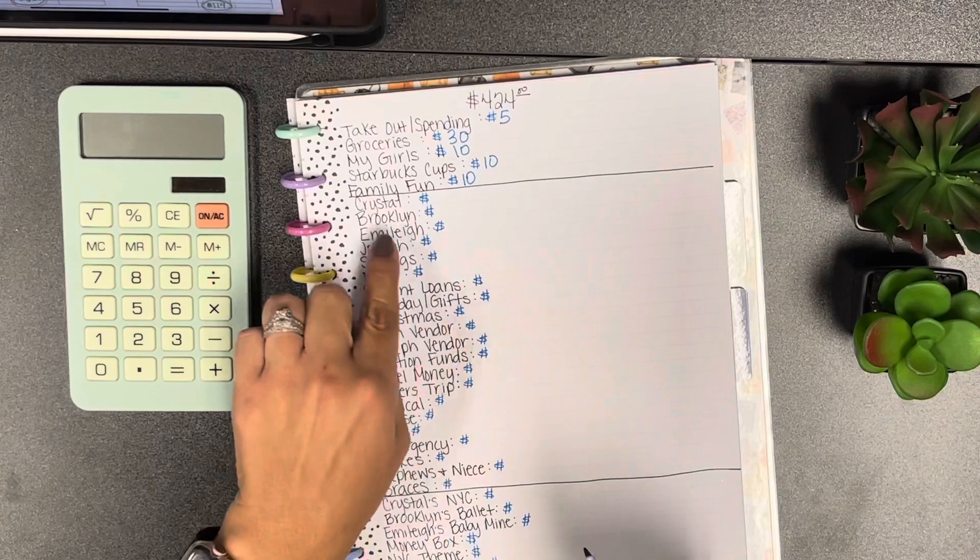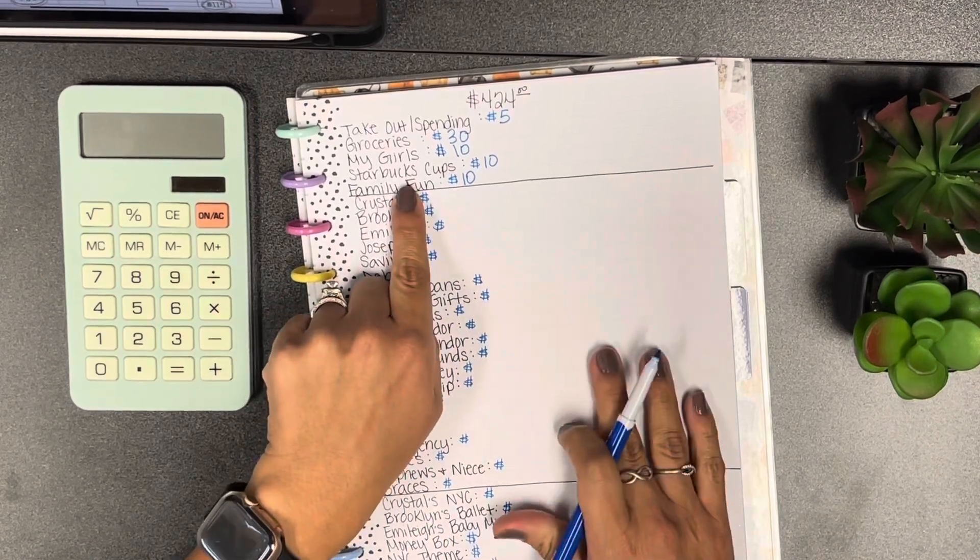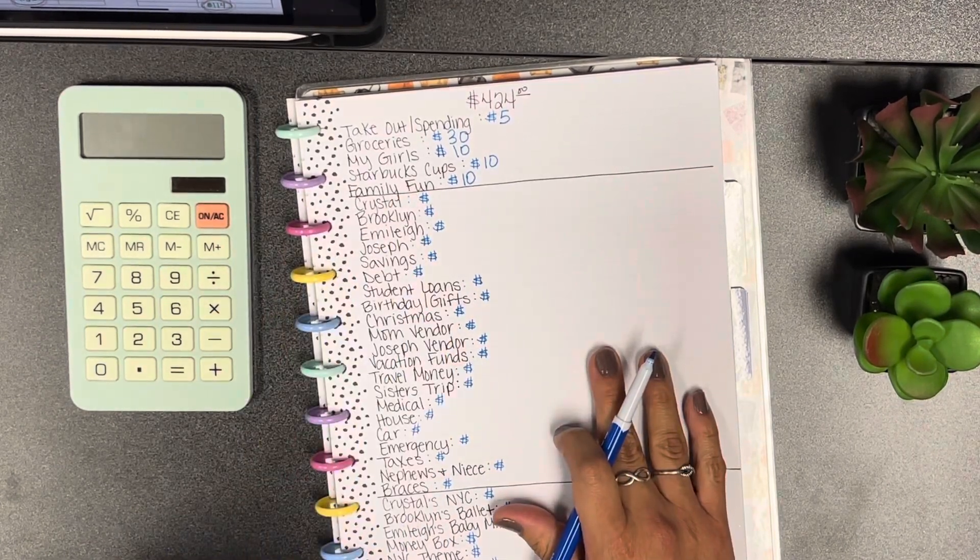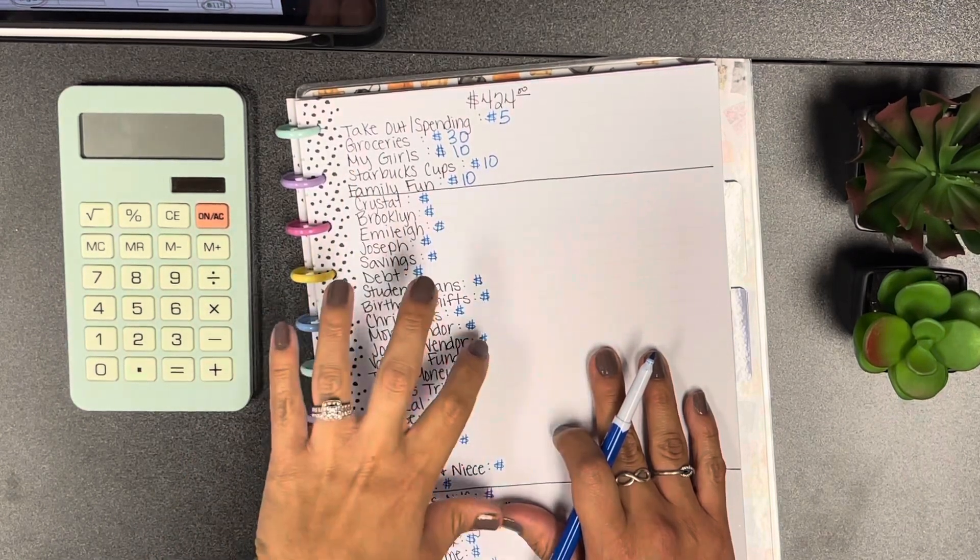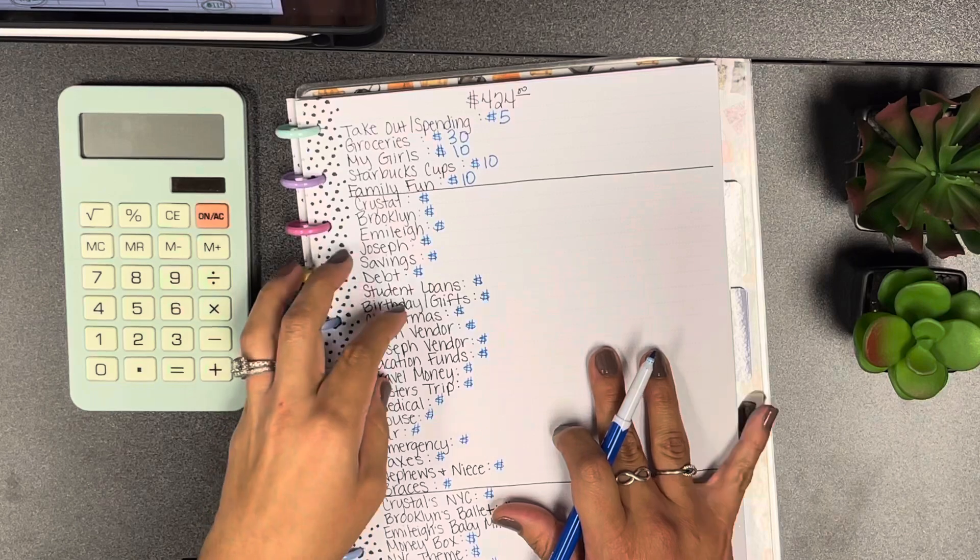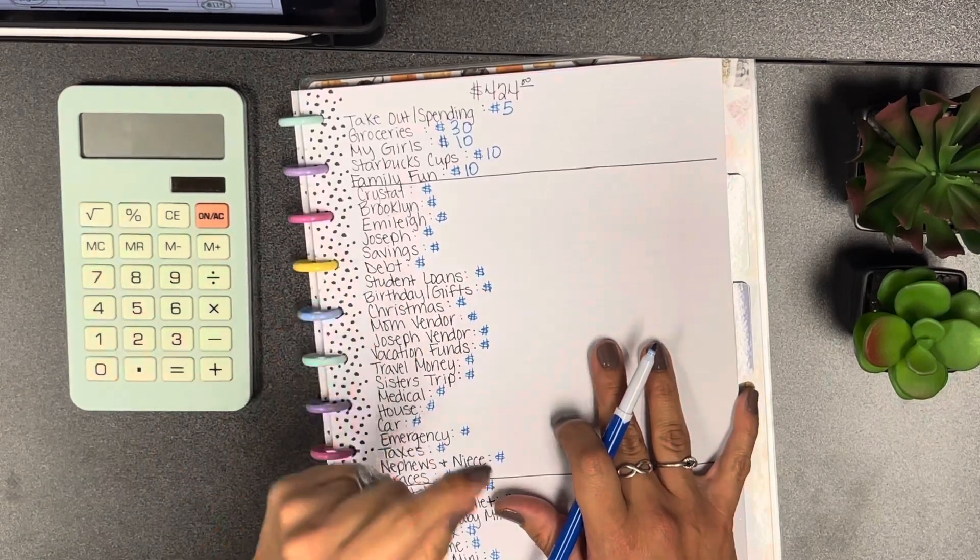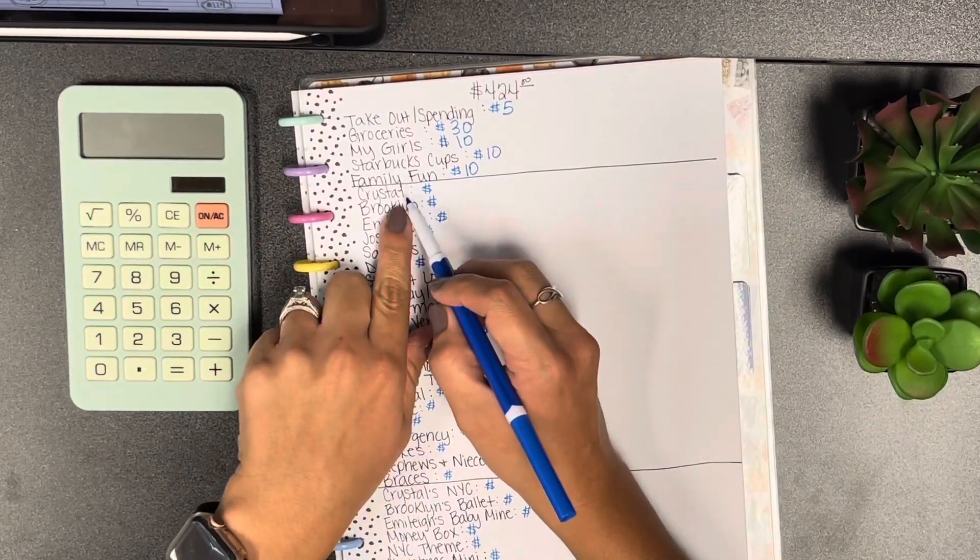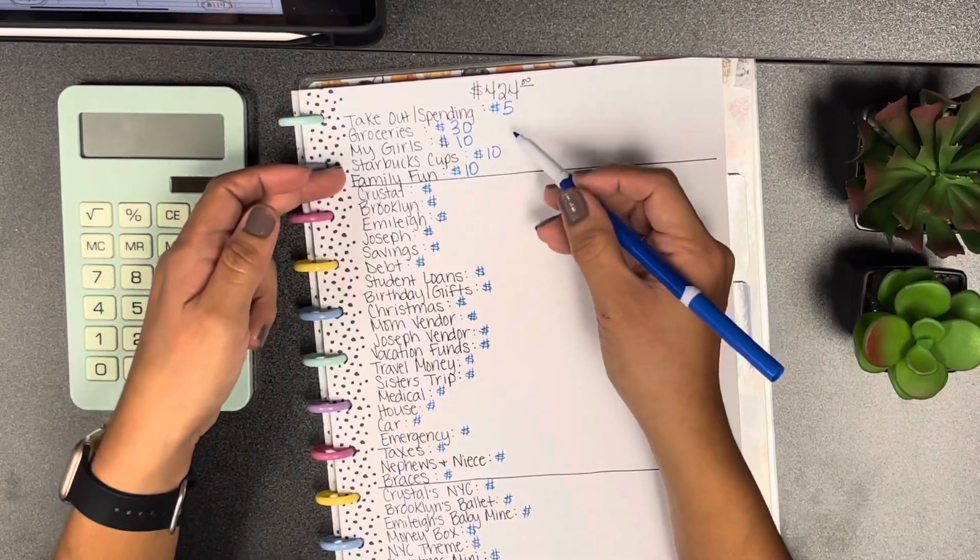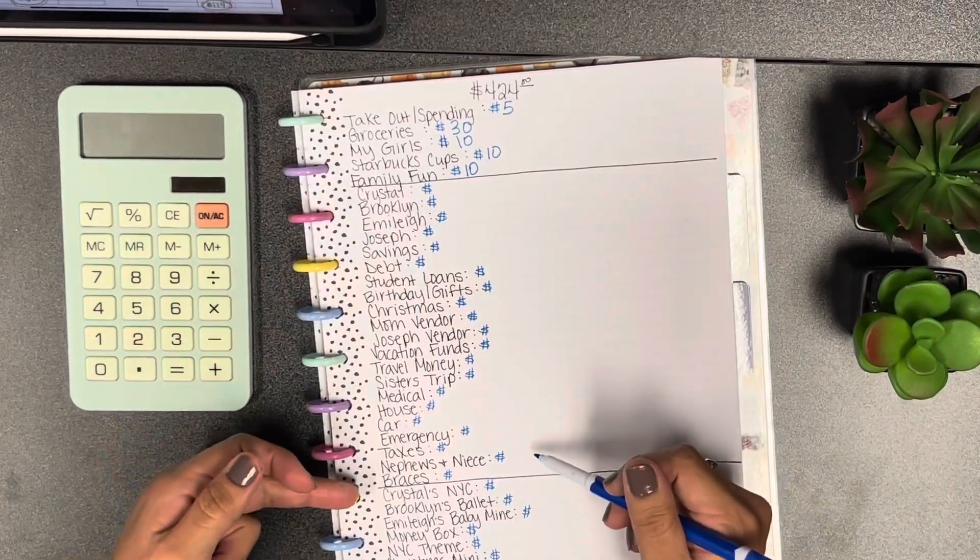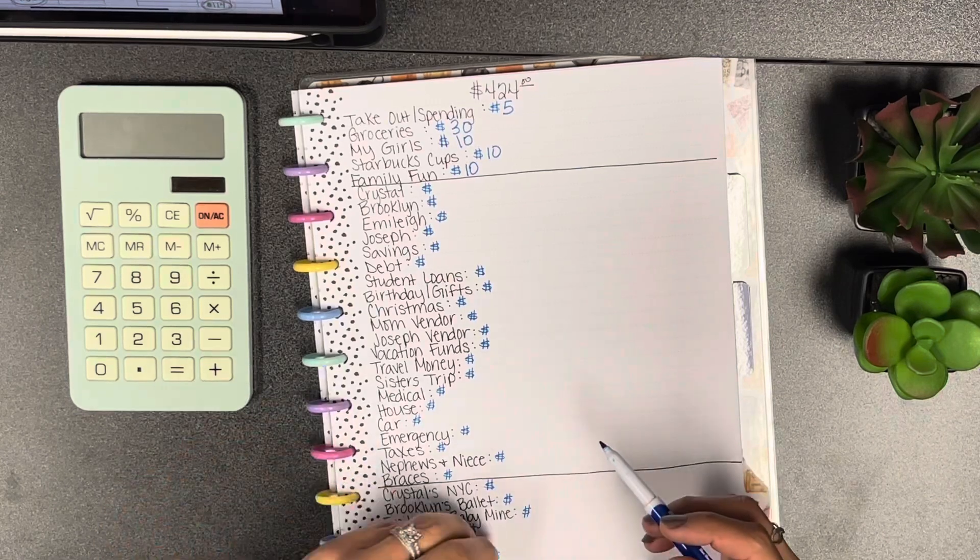Starbucks cups we're gonna add 10 and family fun we're gonna add 10 as well. I think in the next couple of months I'm thinking about stopping the Starbucks cups ones just because it's getting harder to find cups sometimes. This is my cash envelope section here, then this is my sinking funds, and then the last part is my savings challenges.